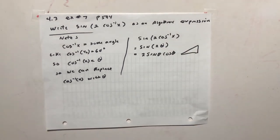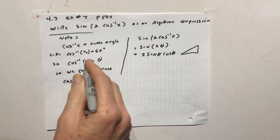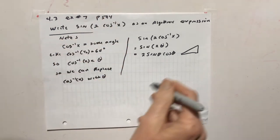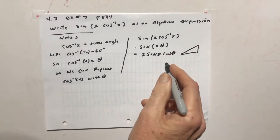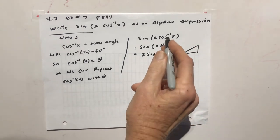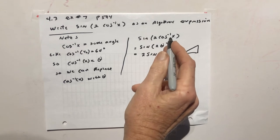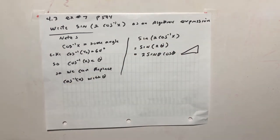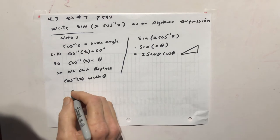Now, to find the answer to our problem, which is the sine of that, we have to figure out the triangle. Well, this is cosine x. We can assume, well, we know cosine is adjacent over hypotenuse.